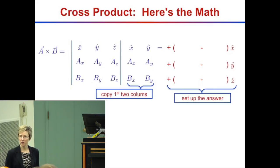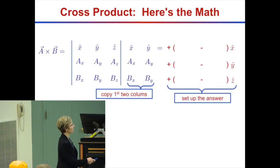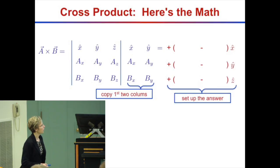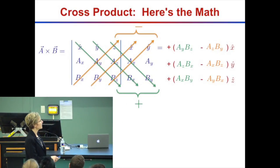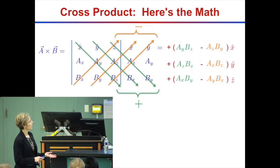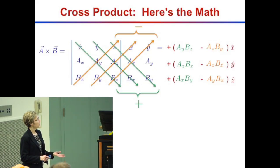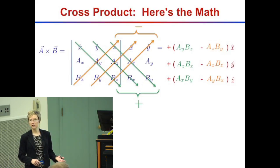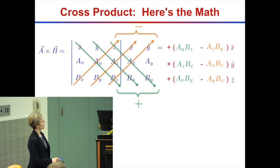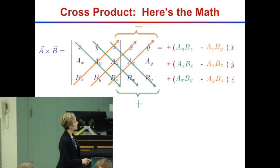Here's one method: copy the first two columns, then draw diagonal arrows. Arrows going down and to the right give positive terms. So x-hat picks up ay times bz, y-hat picks up az times bx. This second diagonal arrow picks up y-hat, az, and bx, giving az times bx in the y-hat direction.